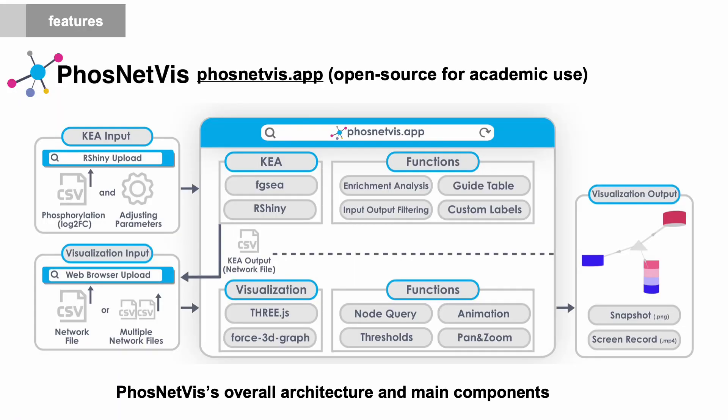The overall architecture and main components of PhosNetViz are represented in this figure. Users can either perform kinase enrichment analysis and now visualize their resulting networks or directly visualize an already existing kinase substrate network that they have or multiple networks they have. Kinase enrichment analysis is performed through an RShiny app using FGSEA where the user has the option to customize labels and also adjust parameters.